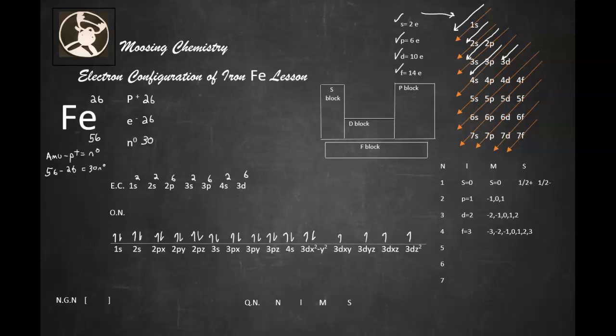Now what about my noble gas notation? Well, the nearest noble gas is going to be argon. So we're going to put argon in there, Ar. And then look at this. We're going to block off our valence shell. And right there is our valence shell. So now let's put it numerically in order. 3d6, 4s2.